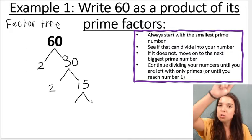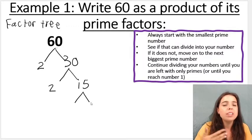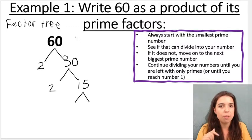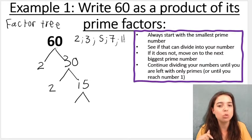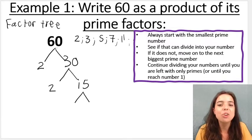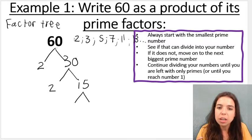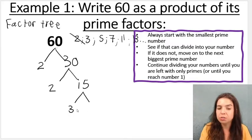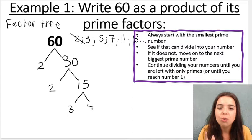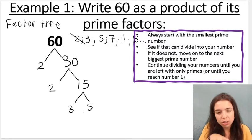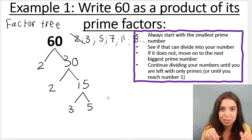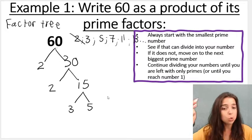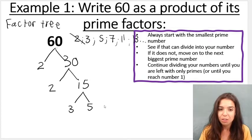Then you go again. Can two go into 15? No, it cannot. What is the next biggest prime number? The prime numbers are 2, 3, 5, 7, 11 — it's almost odd numbers but not quite — 13 and so on. Two cannot go into 15. What about three? Can three go into 15? Yes, it can — five times. Now if you look at my tree and the little two branches at the bottom, three and five are both prime numbers. When you eventually reach a point where you have two prime numbers at the bottom, you stop. It's done — you cannot go any further.